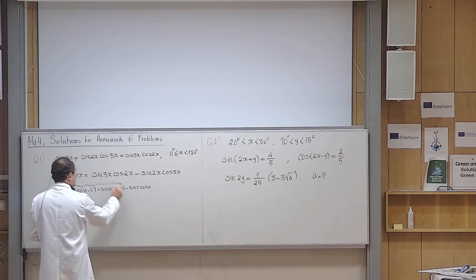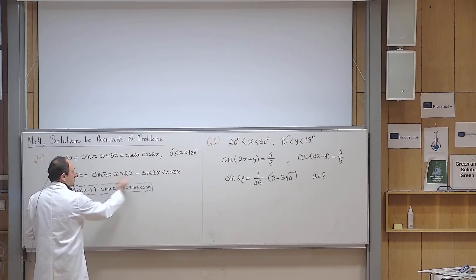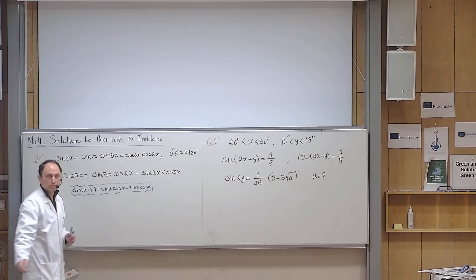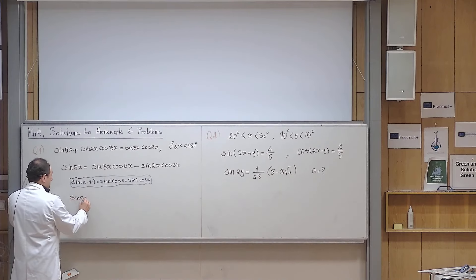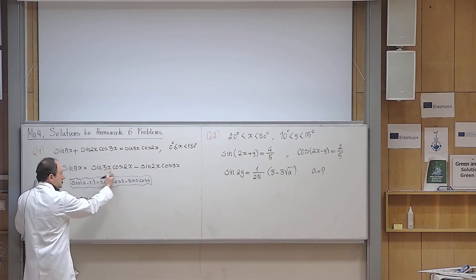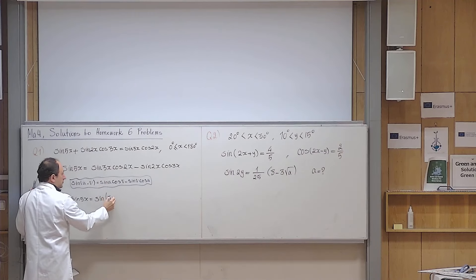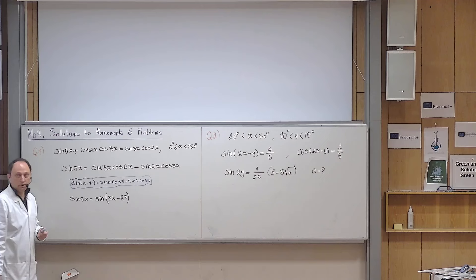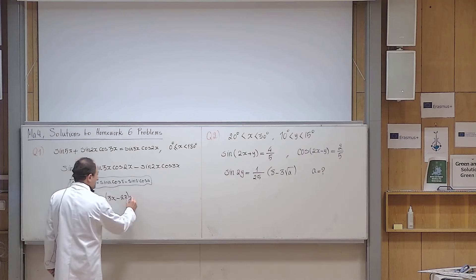In the formula sheet you will see: sine of u minus v equals sine u cosine v minus sine v cosine u. This is the formula. You can immediately compare: this combination matches, where 3x plays the role of u and 2x plays the role of v. So what is 3x minus 2x? It's simply x. So sine 5x equals sine x.